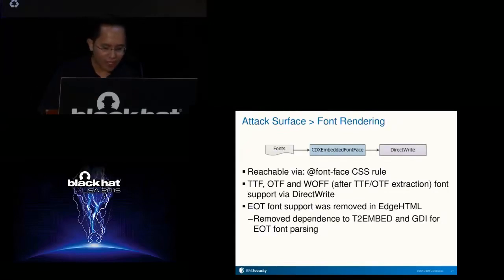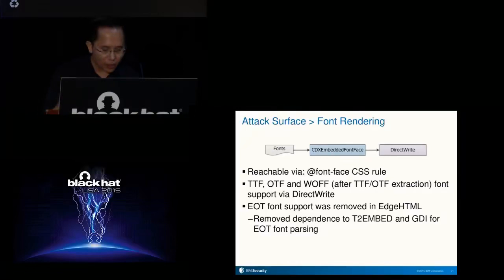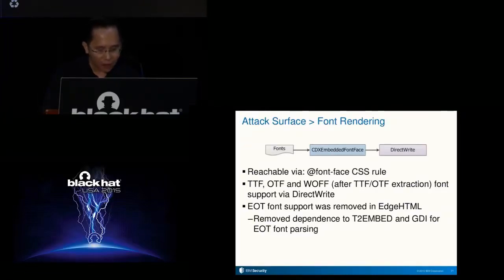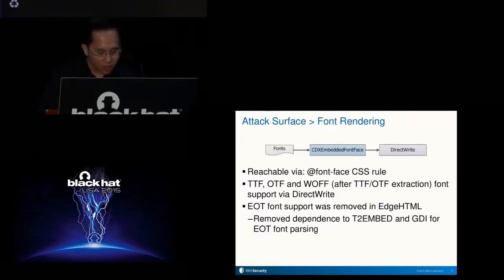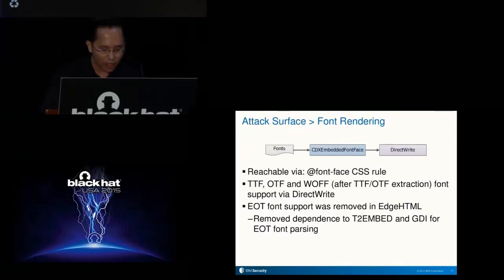Another attack vector is font rendering in EdgeHTML. Using the font-face CSS rule, arbitrary fonts can be passed to the rendering engine. EdgeHTML supports TTF, OTF, and WoF font formats, and they are rendered via DirectWrite. If the font format is WoF, the compressed TTF or OTF font is first extracted and then passed to DirectWrite. An interesting change is that EOT font support was removed in EdgeHTML — because parsing EOT fonts required the use of T2Embed in the GDI library, the number of libraries depended upon by EdgeHTML for font rendering was reduced, providing another attack surface reduction.